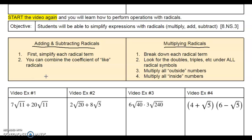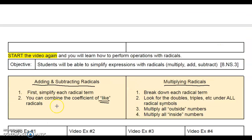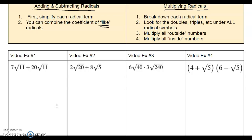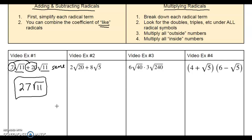If you have the same radical, that means they're like terms, and you can combine the coefficients. The coefficient is the number in front. Let's look at example number one. I've got 7√11 and 20√11. The 11 doesn't actually break down, but both radicals are the same. That means we can combine them: 7 plus 20 is 27, so the answer is 27√11. The root stays the same — you don't change the root.